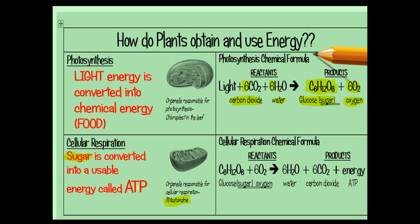Plants need energy too, so plants also have to do cellular respiration. They make their own food, store some of that sugar in their body, and use some of it to grow or do other things they need to do. The chemical formula for cellular respiration is the exact opposite of photosynthesis. It starts with the glucose molecule and oxygen.